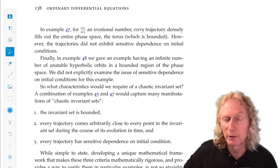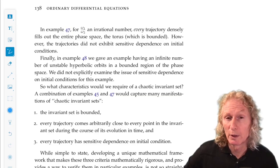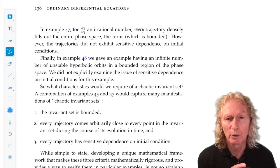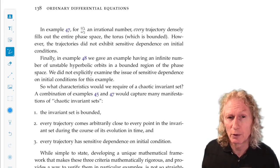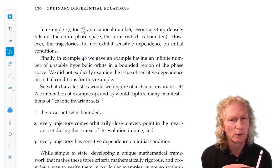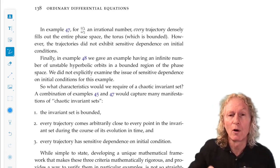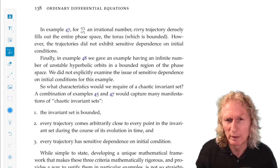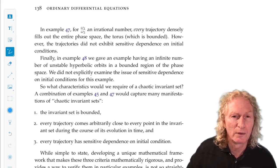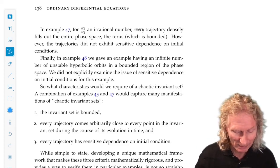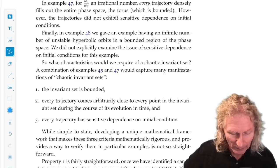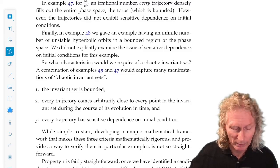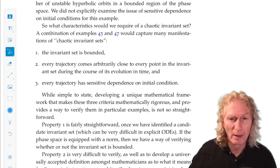47 was interesting. It was a flow on a torus when the ratio of omega 1 and omega 2 is irrational. Any trajectory will densely fill out the torus. But if we take two neighboring trajectories, they don't separate, they just evolve together for all time, not moving apart, not moving together, stay the same distance apart, and densely filling out the torus. We wouldn't call that chaotic. And in 48, we have a planar vector field with an infinite number of unstable periodic orbits in a bounded region. We're not going to call that chaotic.